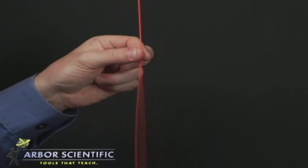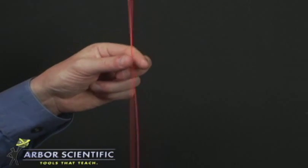If you lightly touch the string in a node, the wave is not disturbed. If you touch the string anywhere else, the wave will become disrupted and will need time to settle into resonance again.